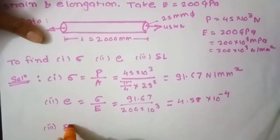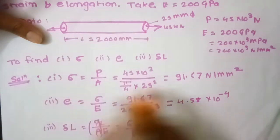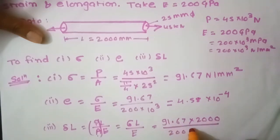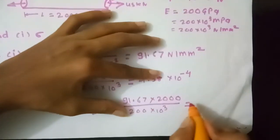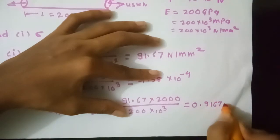Elongation, delta L. P L upon A E. P upon A is stress. That means stress into L upon E. Stress is 91.67 into 2000 mm. Young's modulus 200 into 10 raised to 3. Therefore, delta L 0.9167 mm.